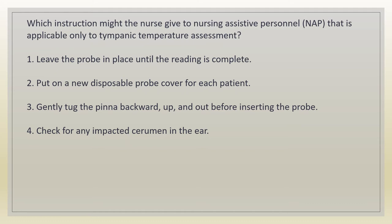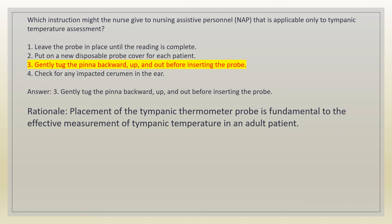Which instruction might the nurse give to nursing assistive personnel that is applicable only to tympanic temperature assessment? 1. Leave the probe in place until the reading is complete. 2. Put on a new disposable probe cover for each patient. 3. Gently tug the pinna backward, up, and out before inserting the probe. 4. Check for any impacted cerumen in the ear. Answer: 3. Gently tug the pinna backward, up, and out before inserting the probe. Rationale: placement of the tympanic thermometer probe is fundamental to effective measurement of tympanic temperature in an adult patient.